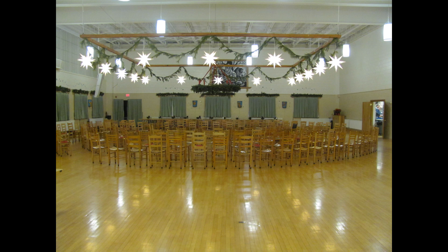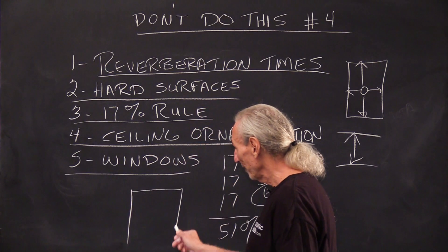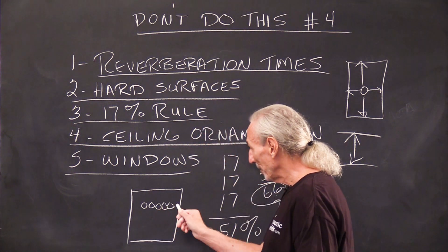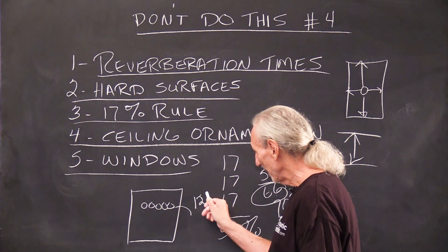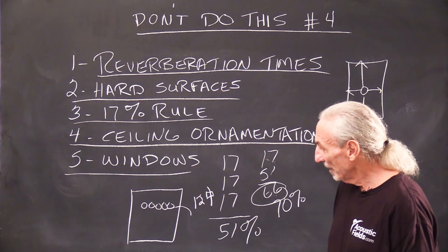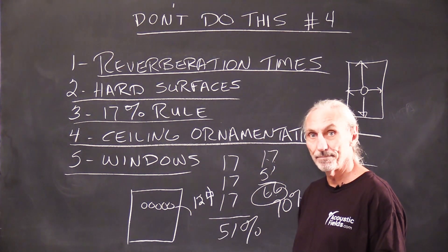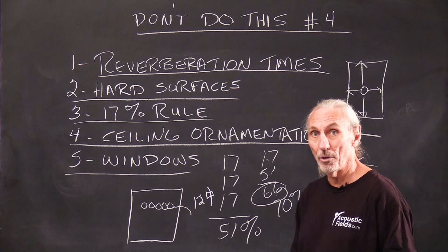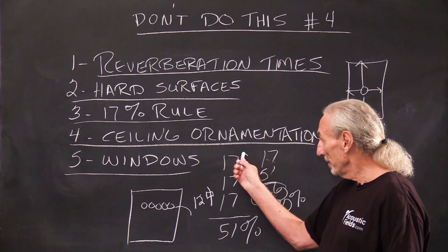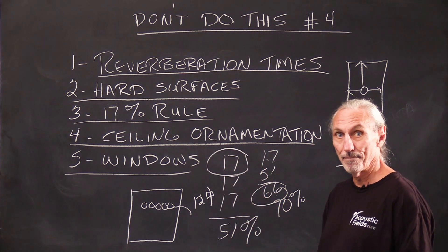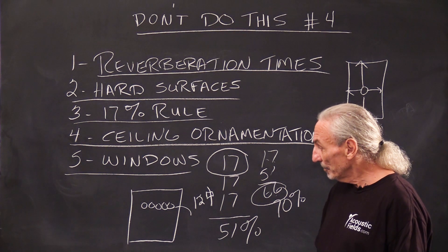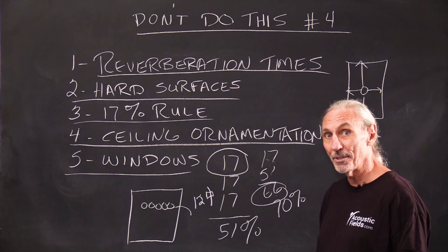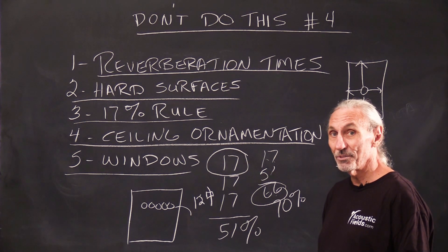Now we know on the floor that when people come in and start filling up the room, every person is about the equivalent of 12 square feet of carpet. So if we get 100 people there, we've got 1,200 square feet of carpet. That's usually good enough to call the floor treated and log that into our column.